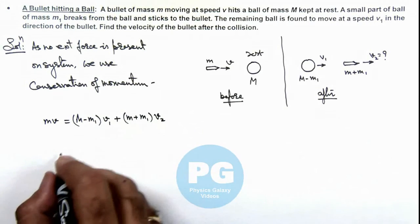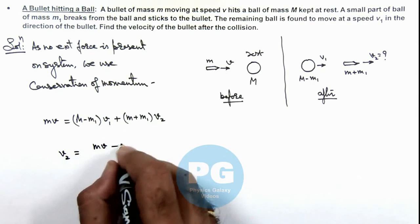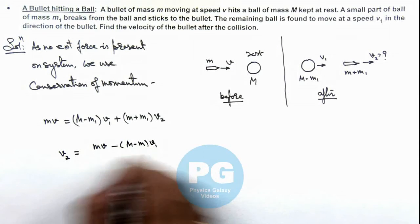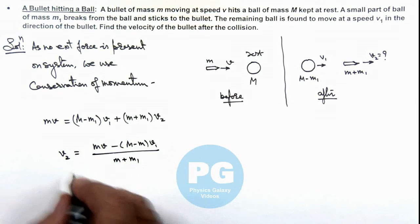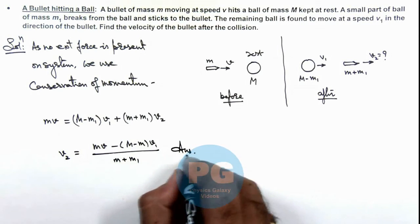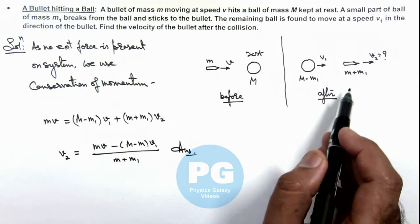Directly from this equation we can get the value of v2, which is [mv - (M-m1)v1] divided by (m+m1). So this is the result of the problem. Directly by using conservation of momentum, we can find out the velocity of the bullet after collision.